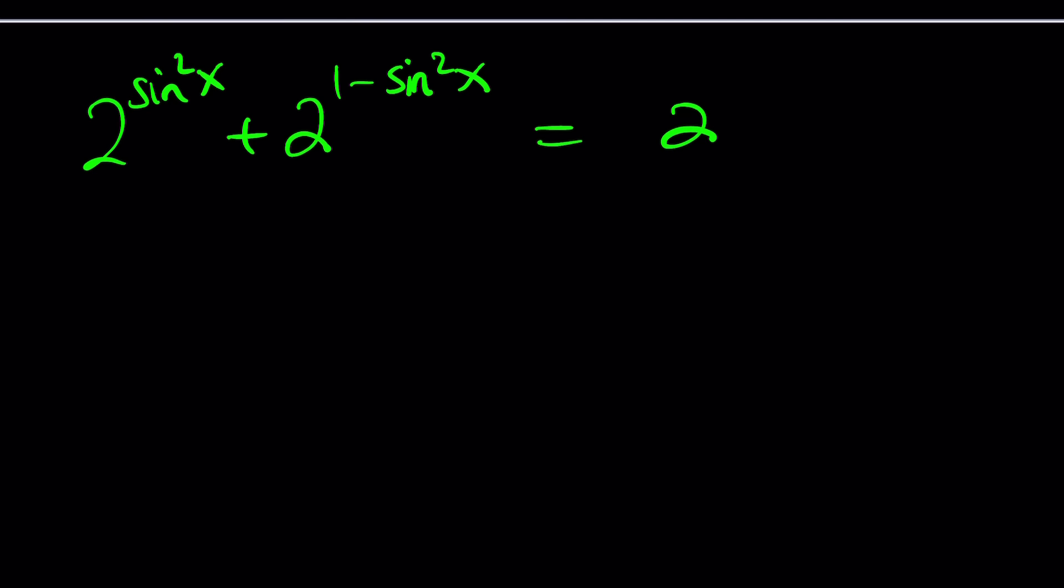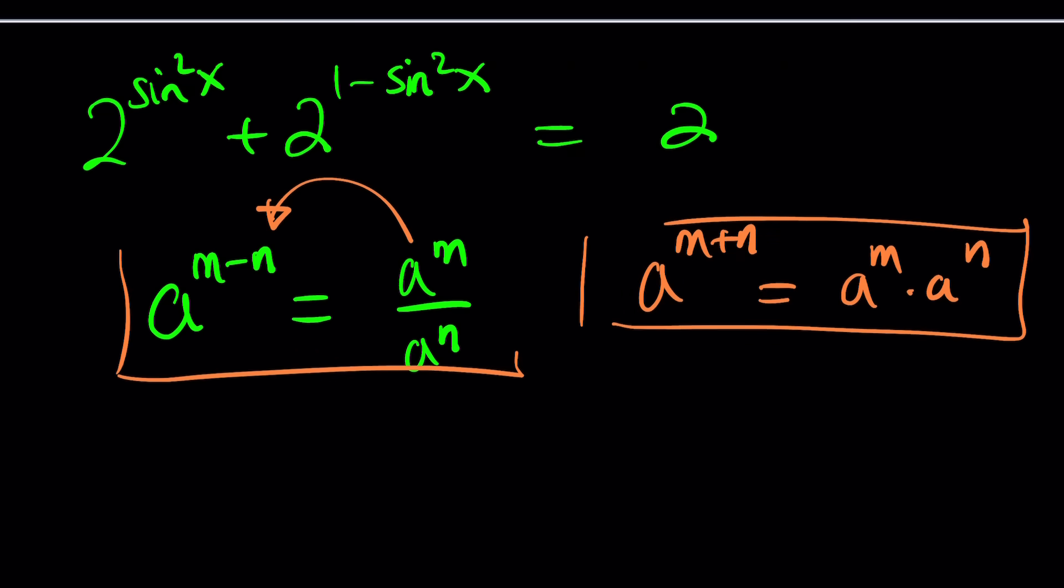So properties of exponents, something I've been thinking about making a video for a long time, but I never had a chance or I forgot. And I'm lazy, obviously. But here's the thing. Whenever you have something like a to the power m minus n, it can be written as a to the m divided by a to the n. Of course, this works both ways. And generally, they give properties like this. But I think this is more helpful. What happens if you have the sum of exponents? Then, of course, you can break it down into a product. These properties are super helpful. And when you learn logarithms, they will be super helpful as well.